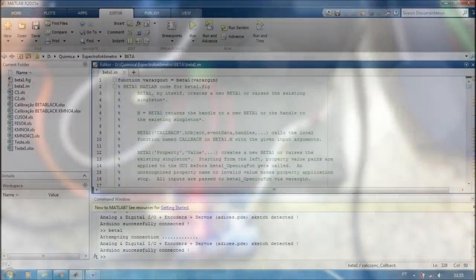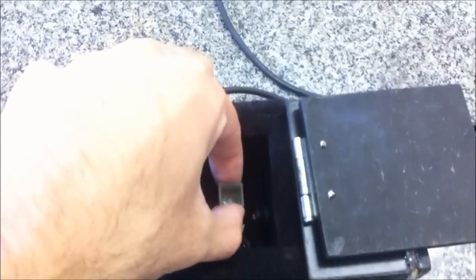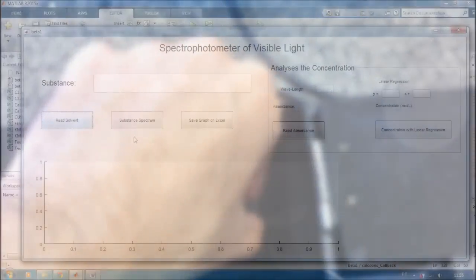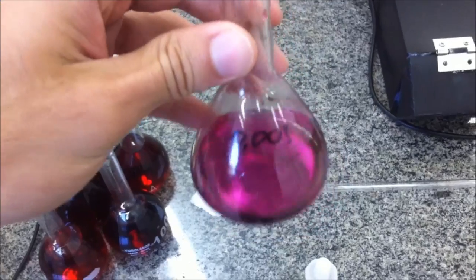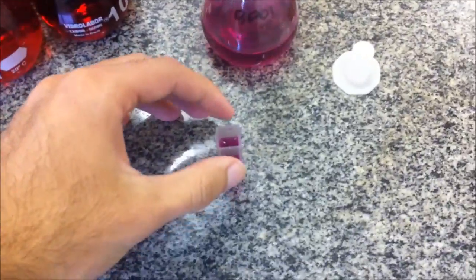In MATLAB, I programmed an interface that controls the Arduino. This interface helps the user to make the analysis of a graphic excluding solvent data and showing the electromagnetic spectrum absorbance of a given chemical substance.